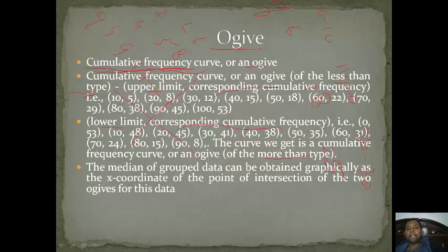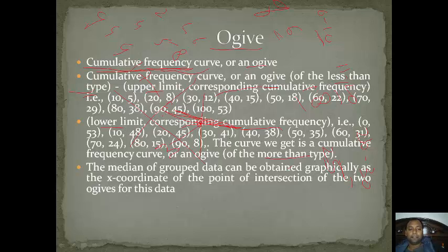When we plot the less than type, we take the upper limits: 10, 20, 30 with corresponding cumulative frequencies 6, 18, 25 and so on. We get another type of curve. Where these two curves — the more than type (lower limit) and the less than type (upper limit) — intersect, that intersecting point is the median of that series. So with the help of an Ogive, by drawing both the less than type and more than type curves, we can find the median.